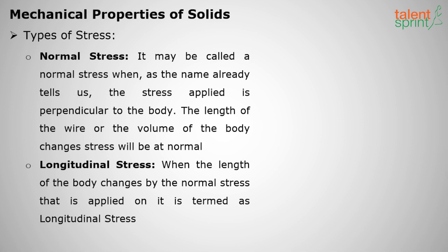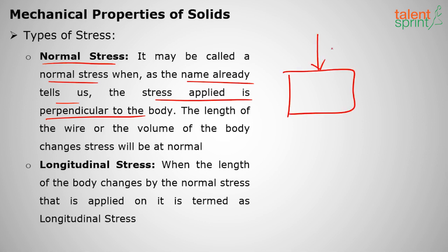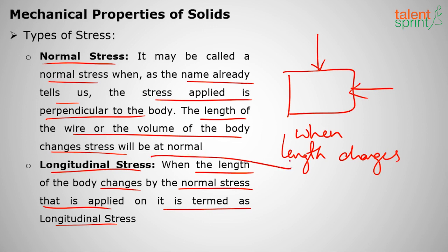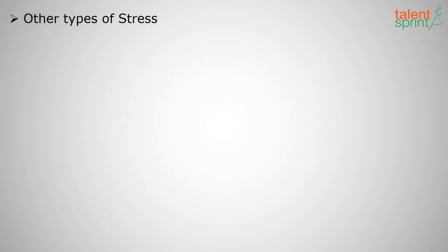There are two main types of stresses. The first is normal stress, where the stress is applied perpendicular to the body, causing a change in the length of the wire or volume of the body. When the length of the body changes due to the normal stress applied on it, it is termed longitudinal stress. When only length changes, it is called longitudinal stress; when volume changes, it is normal stress.